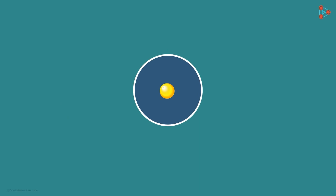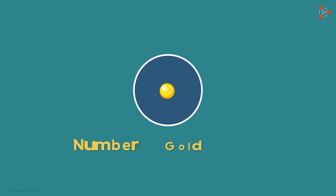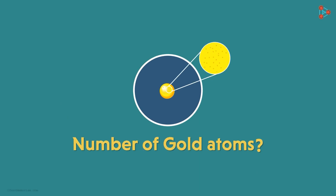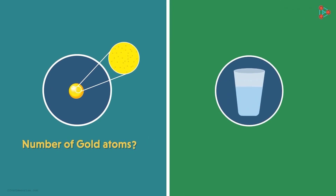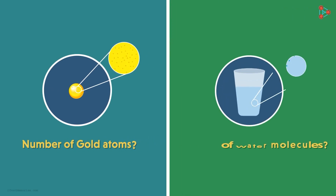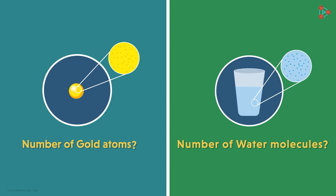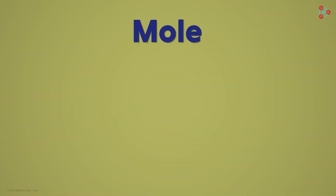Looking at this pure gold, can you tell me how many gold atoms are present in this? Or wait — looking at this glass of water, can you tell me how many water molecules are present in it? You will probably say that it's practically impossible to calculate the number of atoms or molecules in these examples. But astonishingly, chemistry has an answer to this as well. That brings us to the concept of mole.